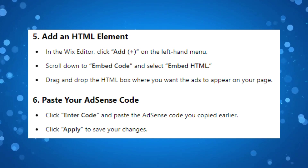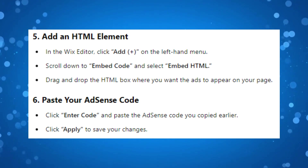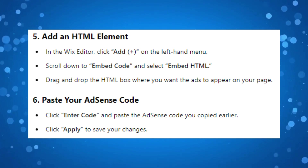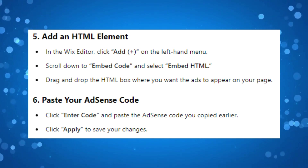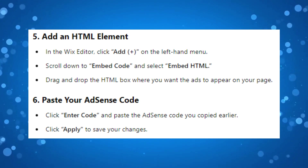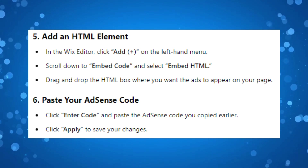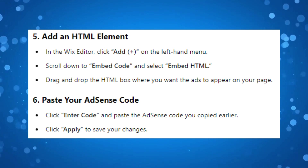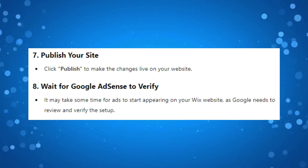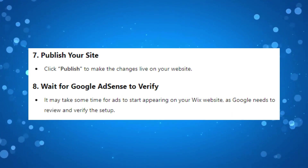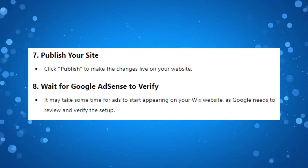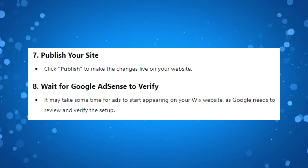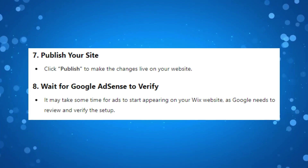After doing this, click on Enter Code and paste the AdSense code you copied earlier. Then go ahead and click Apply to save your changes. Finally, click the Publish button to make the changes live on your website.